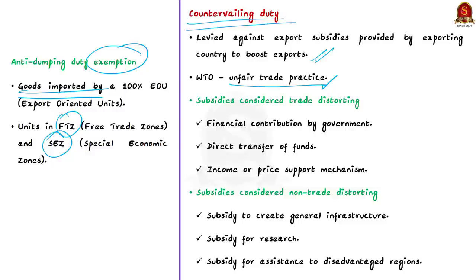For example, if the Chinese government provides export subsidies on a product, it will make that Chinese product low-priced in the Indian market — an advantage for the Chinese company but a disadvantage for competing Indian products. To overcome this, India can impose countervailing duty on Chinese imports. Countervailing duty is attracted when there is financial contribution by the government or a public body of the exporting nation, direct transfer of funds, or any form of income or price support that directly or indirectly increases exports.